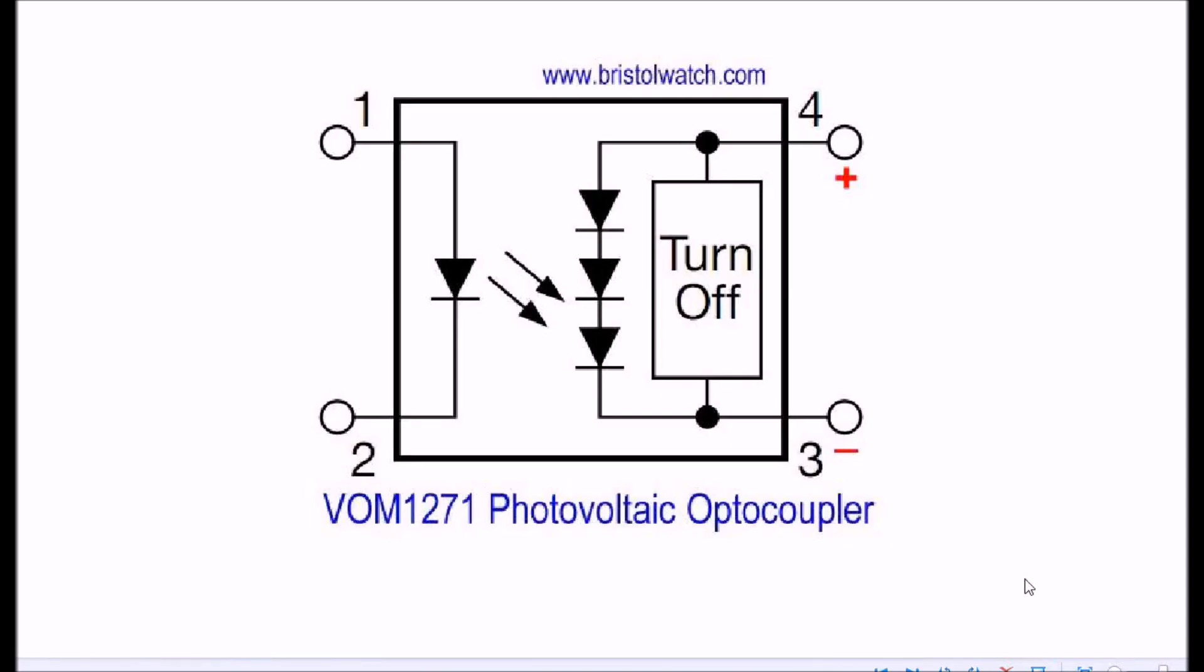This is the VOM1271 photovoltaic optocoupler. It has an emitter LED like almost any other optocoupler, and a series of photodiodes connected in their voltage output configuration. The device also has internal turnoff circuitry, so when you're powering a MOSFET or two with this, you don't need gate bleeder resistors.